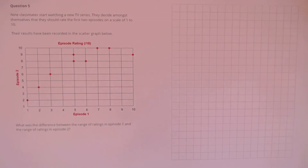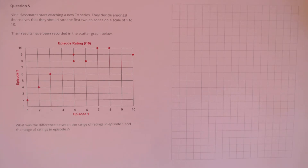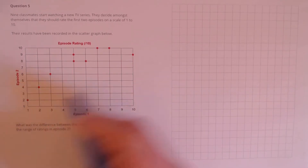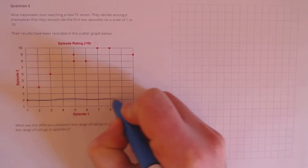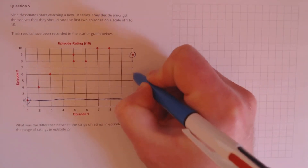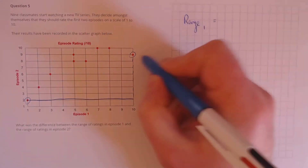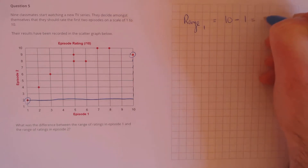Question 5. Nine classmates rate the first two episodes on a scale of 1 to 10. What was the difference between the range of ratings in episode 1 and episode 2? The range is the largest data point minus the smallest. For episode 1, the lowest rating is 1 and the highest is 10, so the range of episode 1 is 10 minus 1, which is 9.